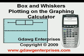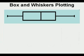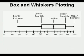Box and whiskers plotting on the graphing calculator. A box and whiskers plot is a graphical representation of a data set. This representation gives key values graphically rather than numerically. In this video we'll learn how to create a box and whiskers plot or box plot on the graphing calculator, and we will also use the plot to interpret the data.